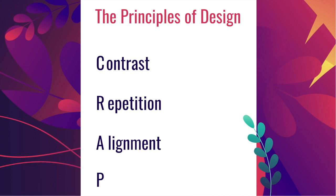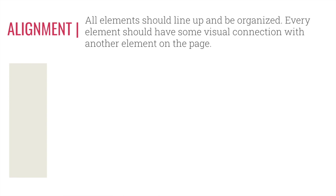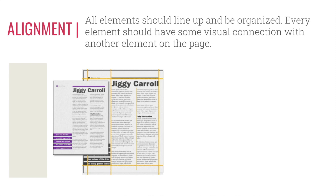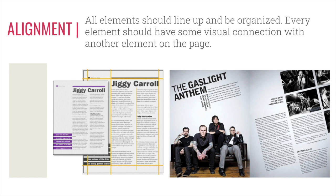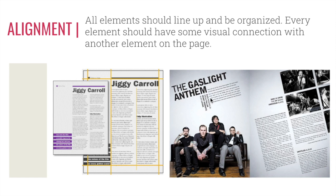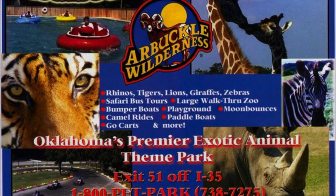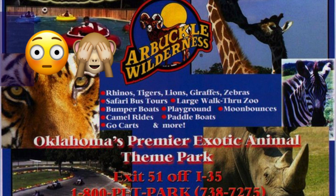Now that you know C for contrast and R for repetition, moving on is the A which stands for alignment. Alignment says that all elements should line up and be organized — every element should have some visual connection with another element on the page. Most programs now have a snap-to-grid feature where you can see if elements like lines and titles line up perfectly with your paragraph or body text. You can have straight alignment, or a designer may even tilt elements — but there is still a visual straight line you can draw. Nothing should be pasted on a page arbitrarily. When someone throws images, text, titles, and icons on a page without thinking of alignment, we call that visual vomit, which causes confusion and makes the design unreliable.